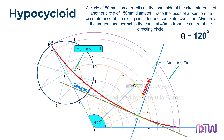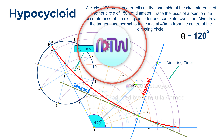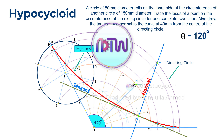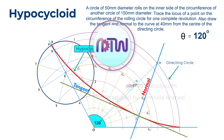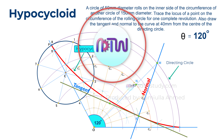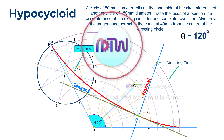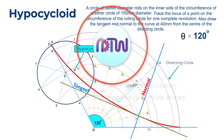Therefore, we have the required hypocycloid, and the normal and the tangent. I hope this video helped you understand how to draw the hypocycloid of a circle. If you like my videos and want to learn more, you can check out the link in the description for the complete engineering drawing course. If you are new to my channel, subscribe and turn on the notifications to get all my latest videos.